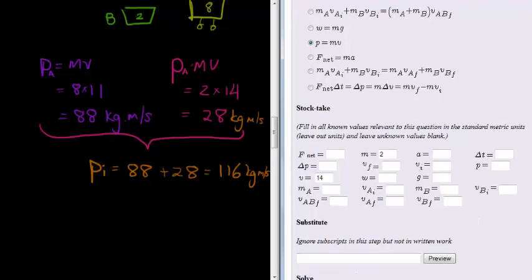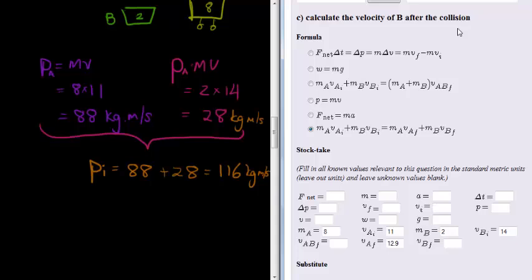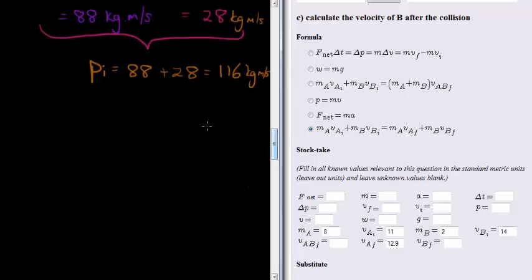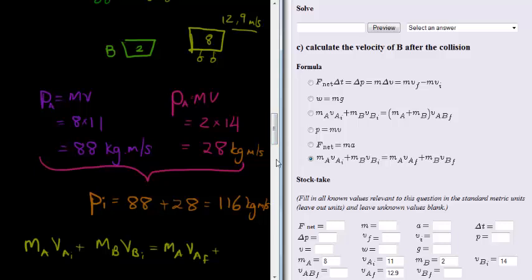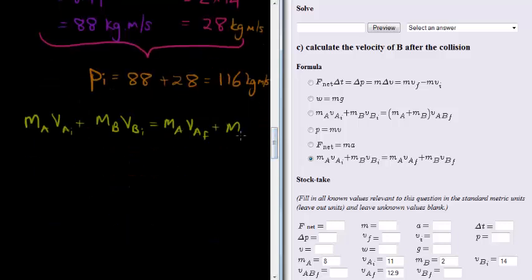In the next question they asked me, calculate the velocity of B after the collision. So what is happening this time, we don't know if they got stuck together or not. So let's just assume they don't, otherwise we might run into trouble. So we have the mass of A and the velocity of A plus the mass of B times the velocity of B initial is equal to the mass of A times the velocity of A final. We know that afterwards it was traveling at 12.9 meters per second, plus mass of B times the final velocity for trolley B.